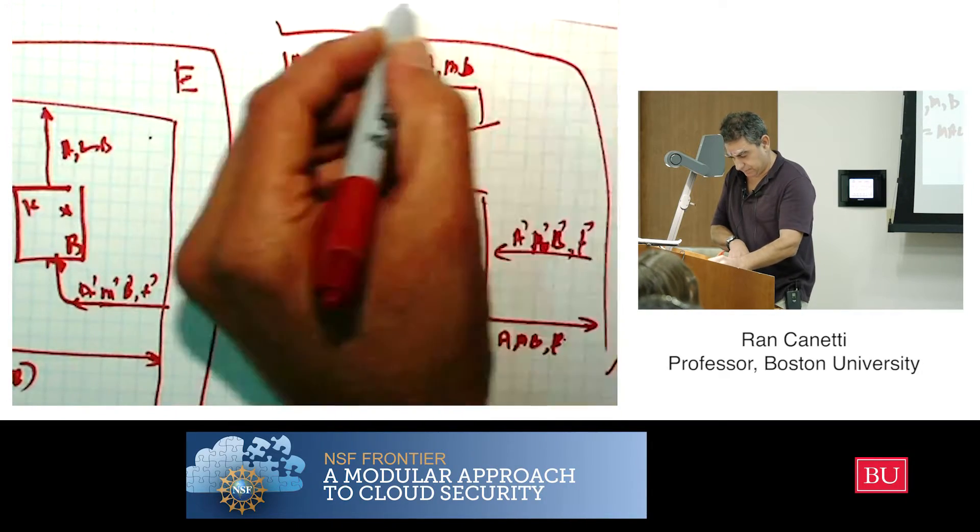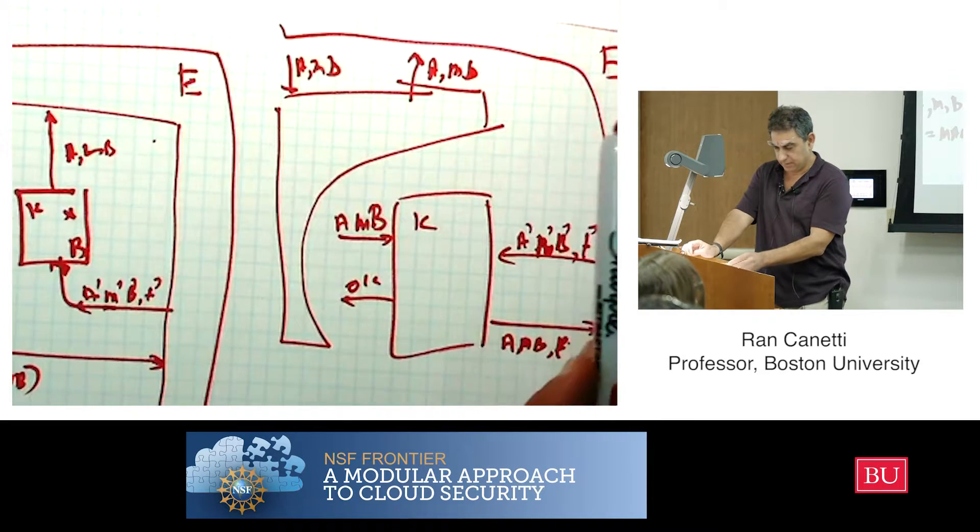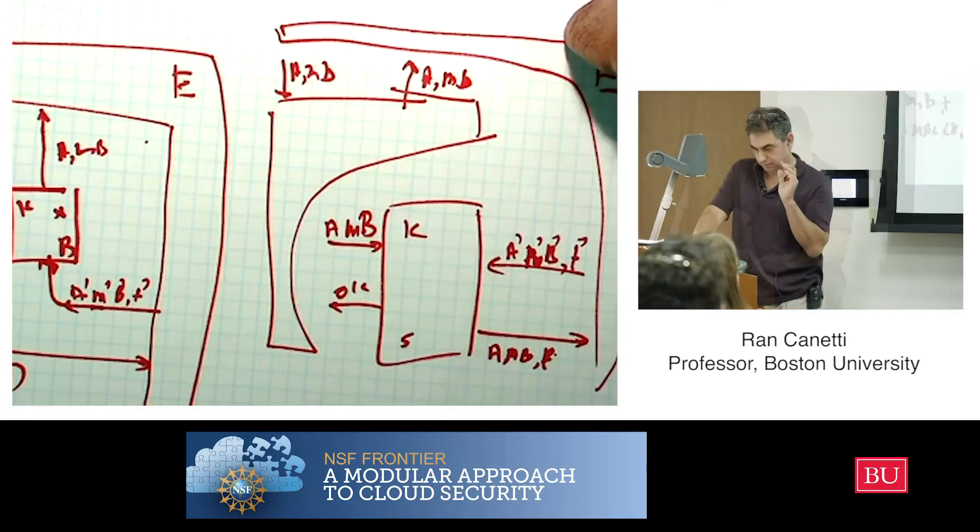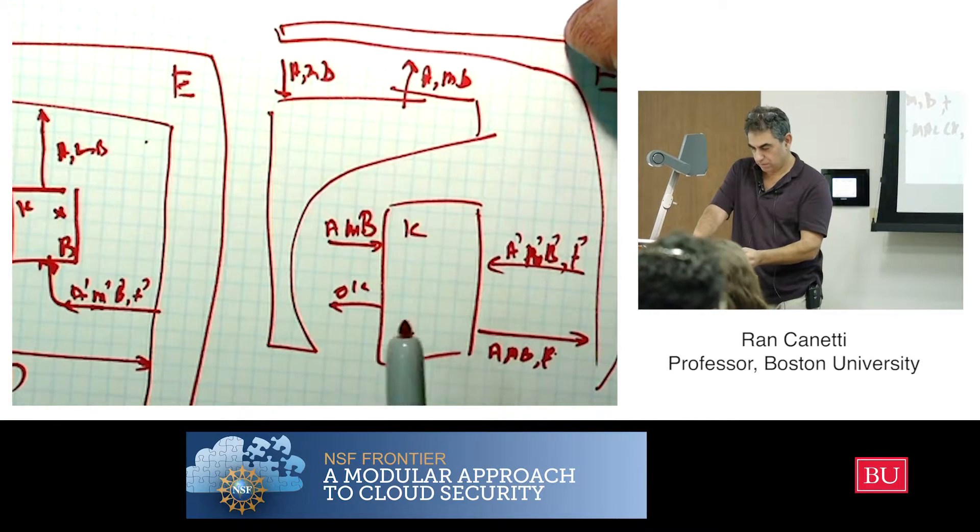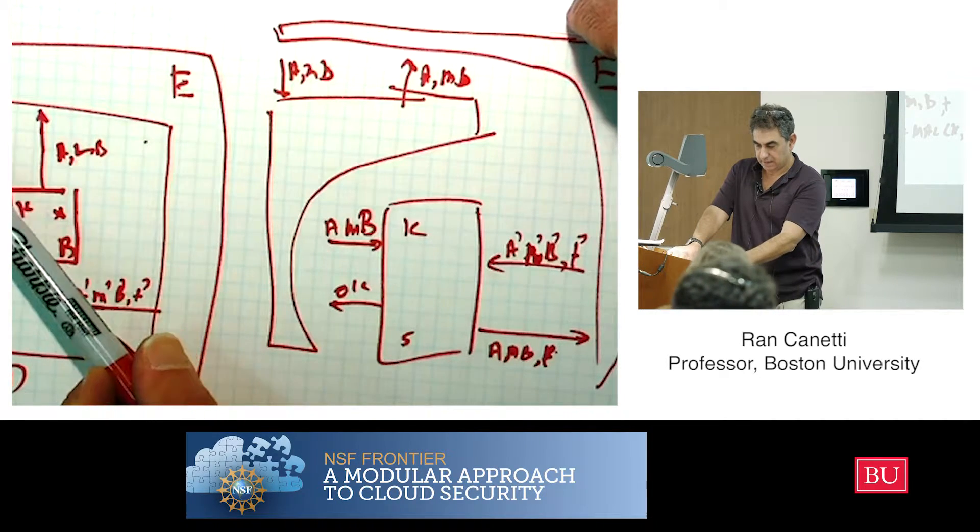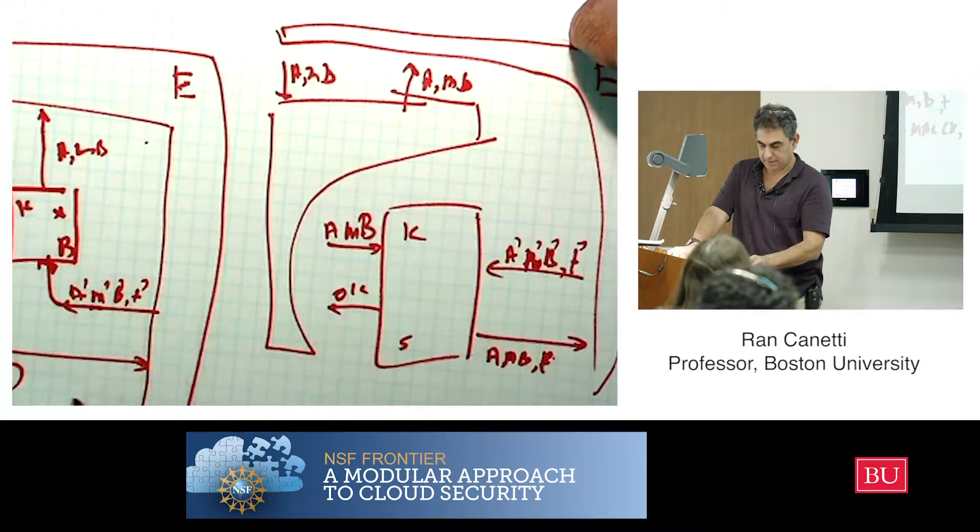And the argument is that, from the point of view of the environment, these two experiments look exactly the same, except for two cases. The environment sees that it chooses A and B, and then it gets a message here with A and B with a tag.